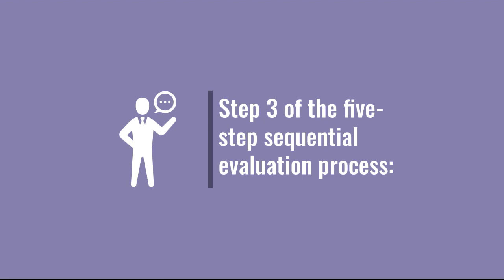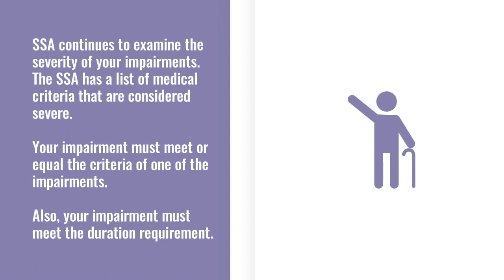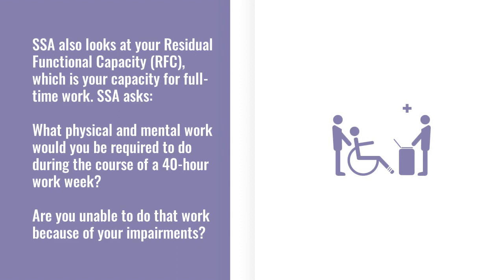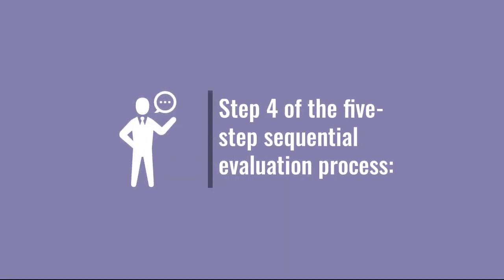Let's discuss step 3 of the five-step sequential evaluation process. Step 3 also considers the severity of your impairments. The SSA has a list of medical criteria considered to be severe. If your impairment meets the criteria of one of the listed impairments and meets the duration requirement, you are found to be disabled. However, before progressing to step 4, the SSA also looks at your residual functional capacity, or RFC. The RFC looks at your capacity for full-time work — how much physical and mental activity you would be required to do during a 40-hour workweek, and whether your condition affects your ability to do that work. The RFC is taken into consideration during steps 4 and 5.